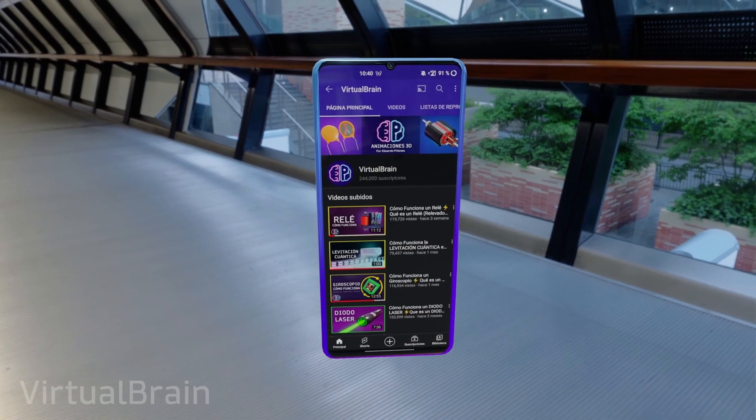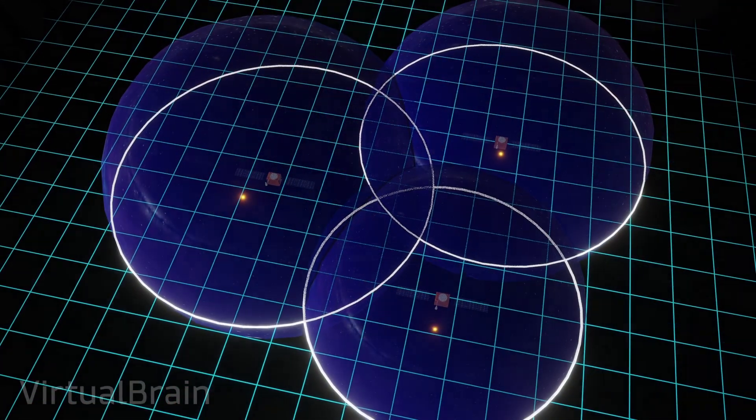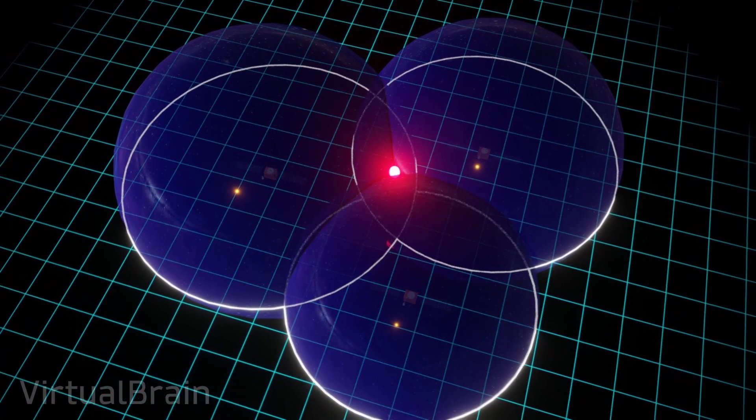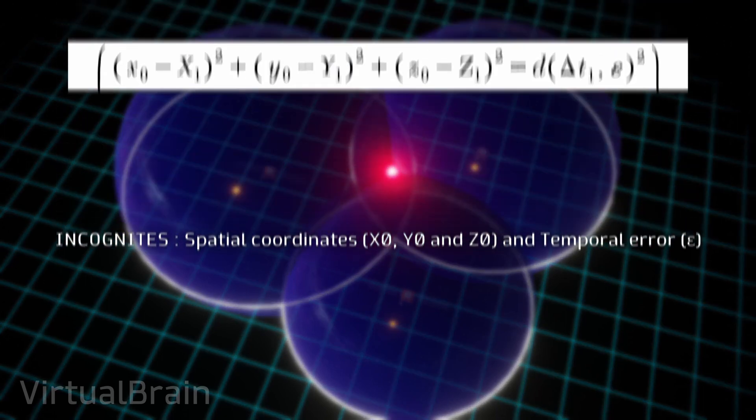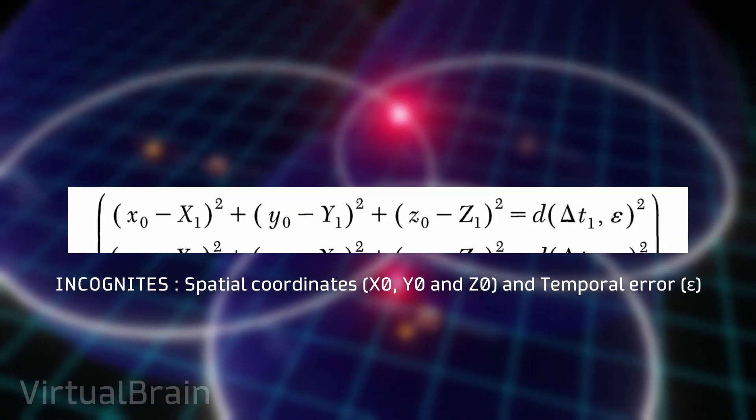And since this error in the arrival time is the same for the signals from all satellites, we can use mathematics to estimate. In other words, this error becomes an unknown to be determined. Thus, we will have four unknowns, the three spatial coordinates and the temporal error.